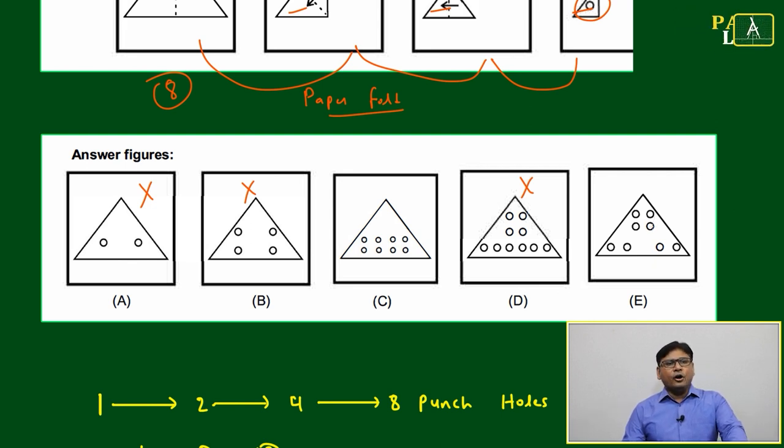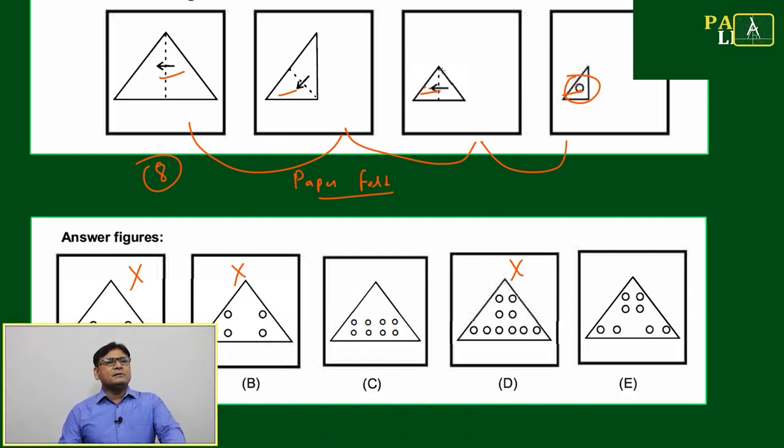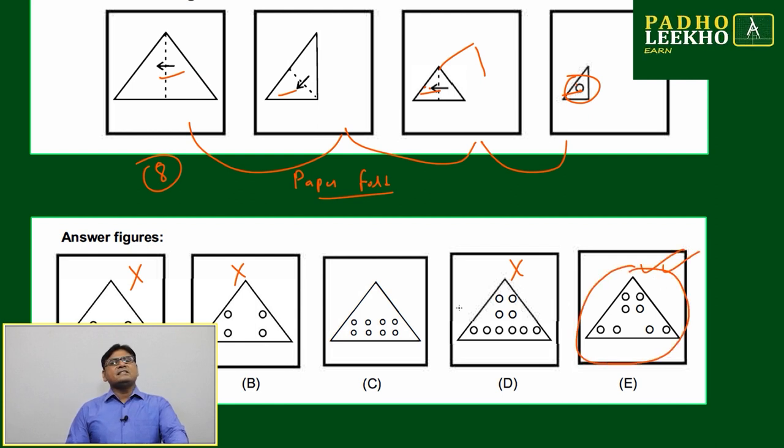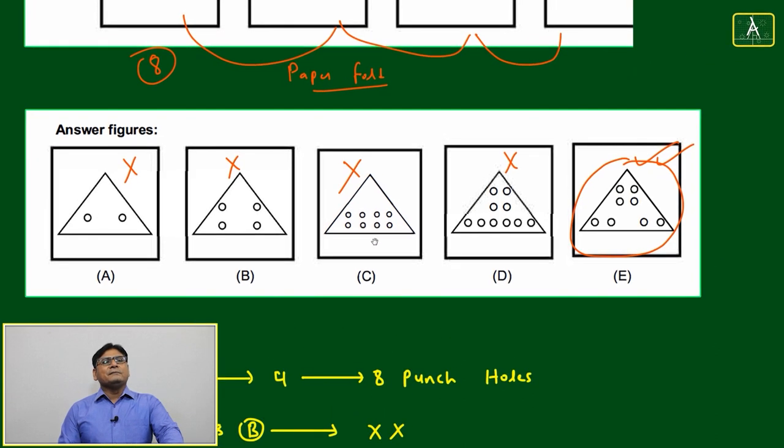Option C or E. Option C or E. Just by looking itself, you can say once you unfold like this, it will come here, and this will unfold like this. Then all folds will arrange like this pattern, not this pattern. Between C and E, we can easily eliminate C.